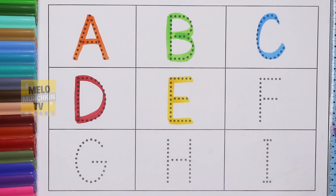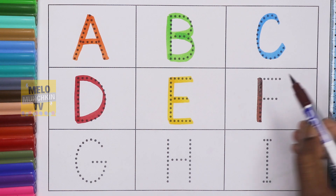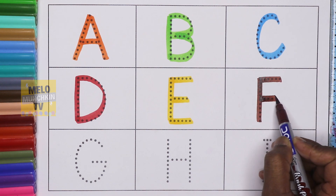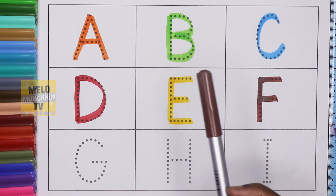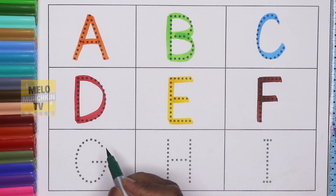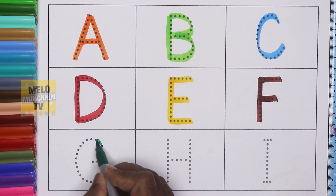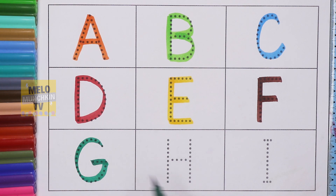Next I'll take brown color to write letter F. F for fish. This is brown color. Next I'll use dark green color to write letter G. G for girl. This is dark green color.